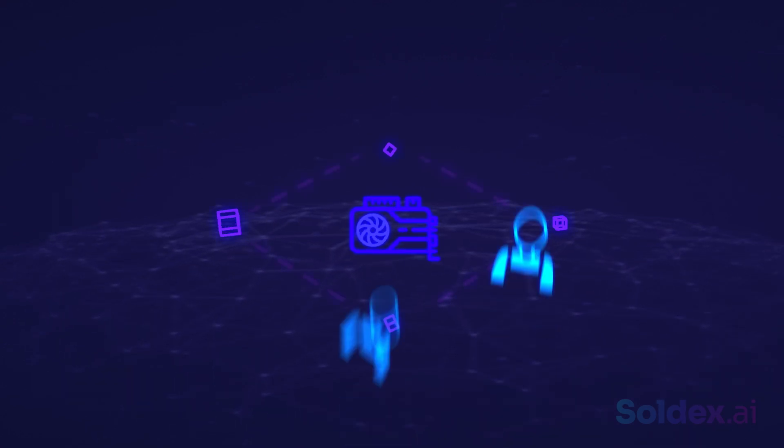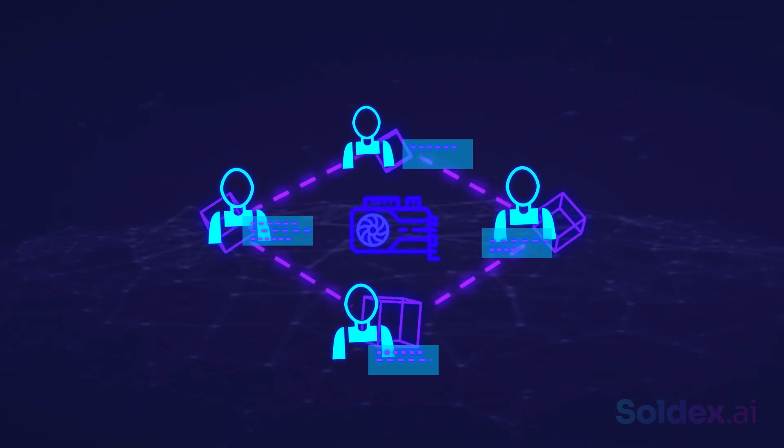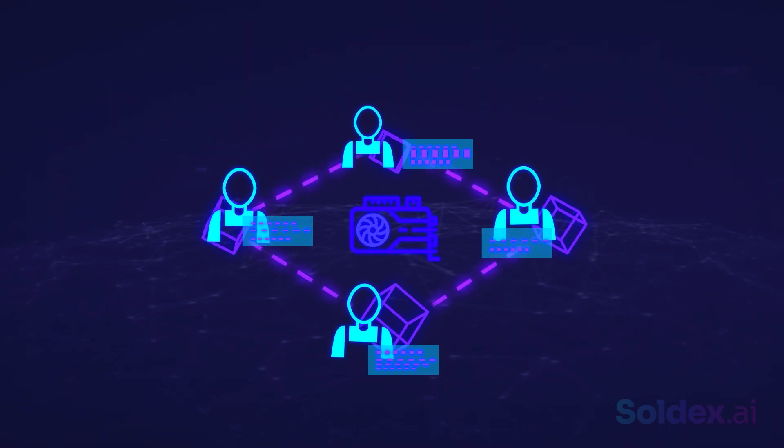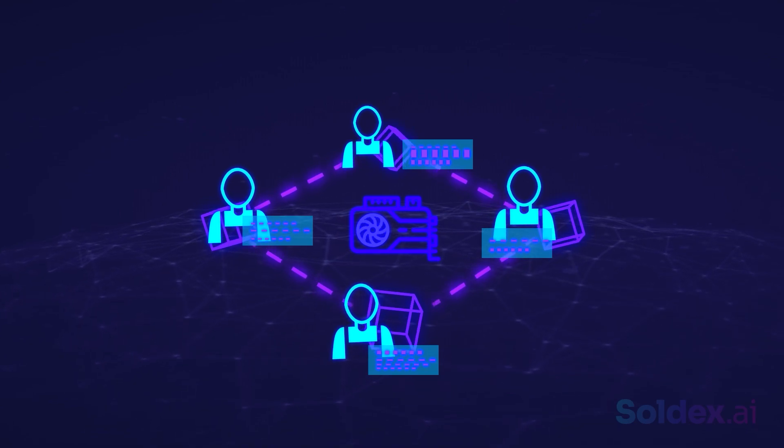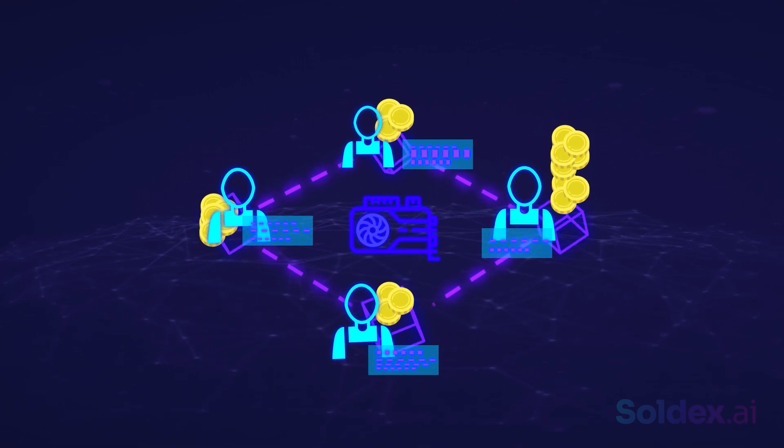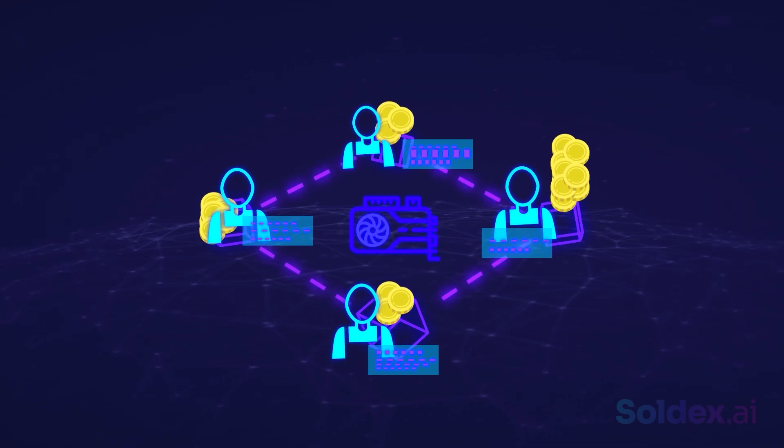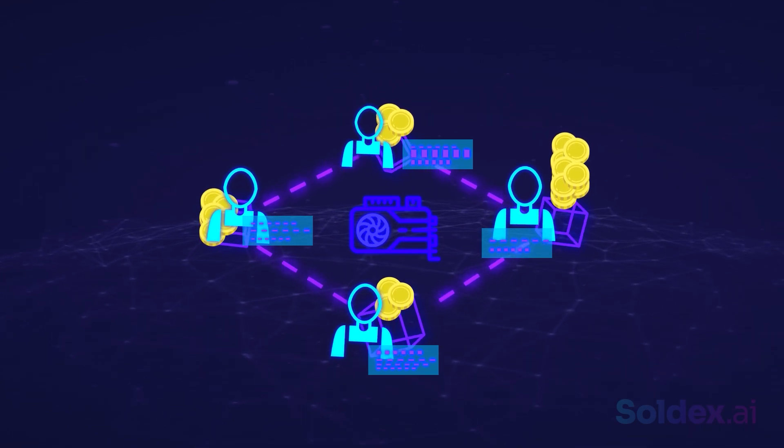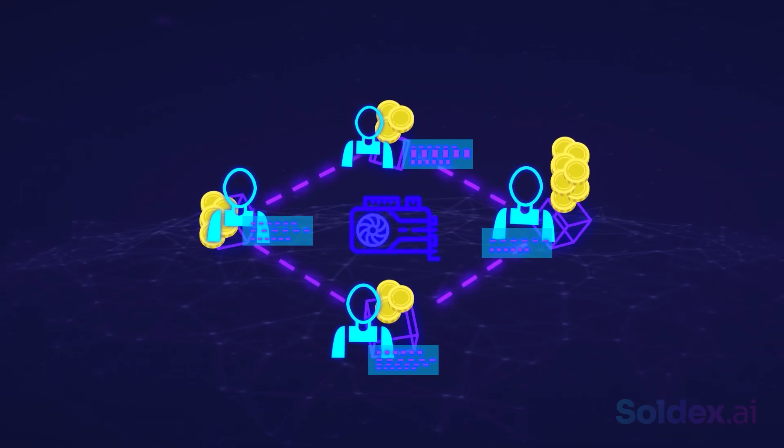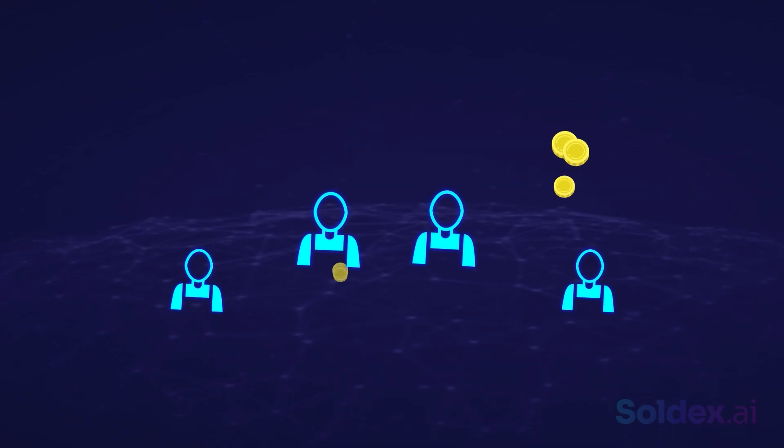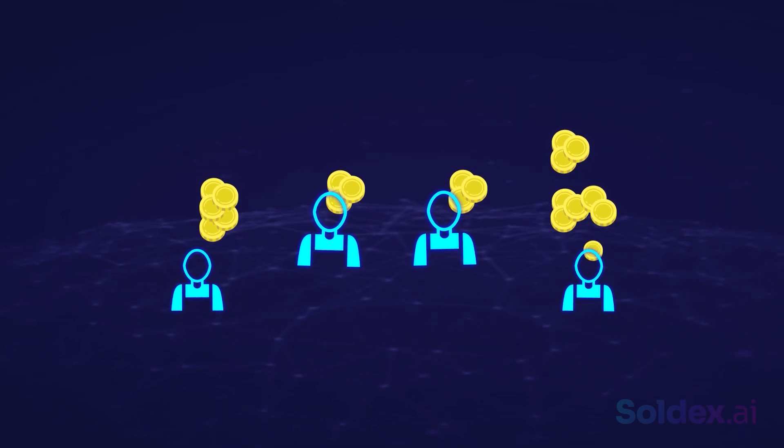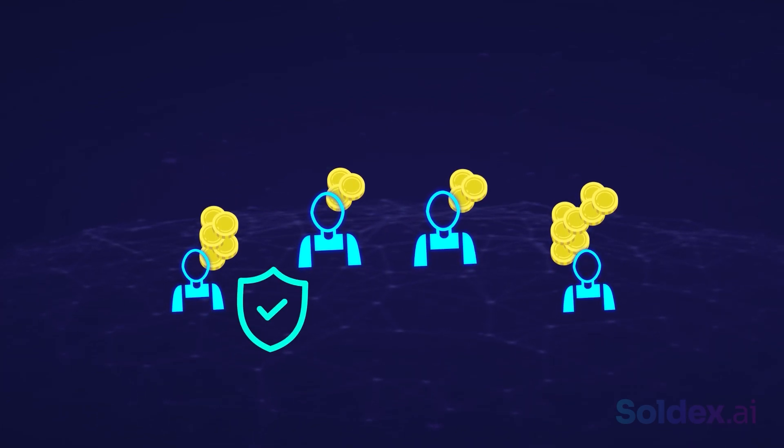Decentralization. It is easier to run a node in the proof of stake system than proof of work. You don't need to make huge investments in energy or hardware. Because it is cheaper to participate in staking, more individual validators increase decentralization. Also, the randomization method makes proof of stake more decentralized. Security. Because validators have a lot at stake in the network, they have strong incentives to keep the network secure and healthy.